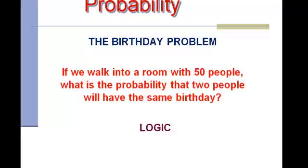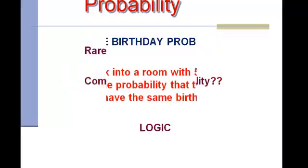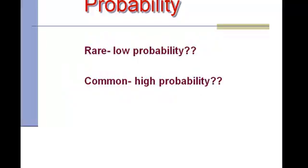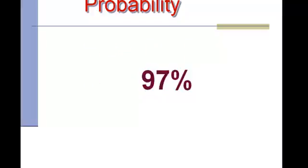The best way to start when doing probability is with the birthday problem. If you and I were to walk into a room with 50 people, what is the probability that two people will have the same birthday? We're logical, rational people — do you think that probability would be rare, a low probability? Or do you think it would be more common, a high probability? The reality is there's a 97% chance that at least two people in a room of 50 will share a birthday. Sometimes probability can fool us and not be quite as logical as we might think.